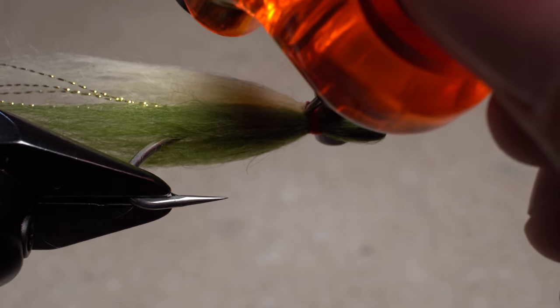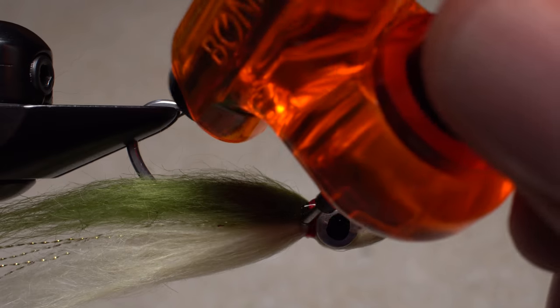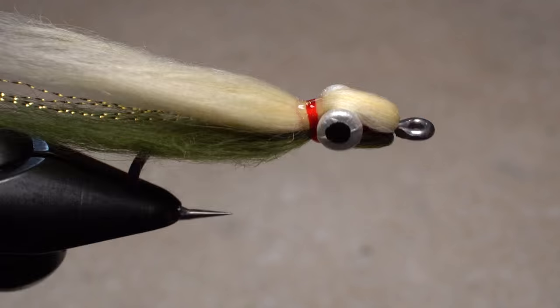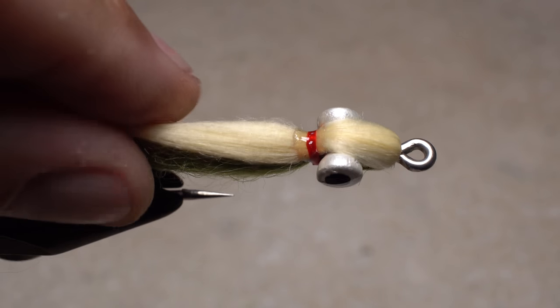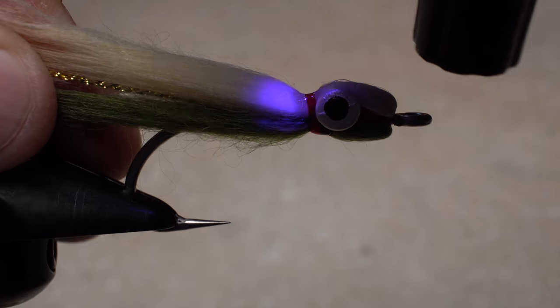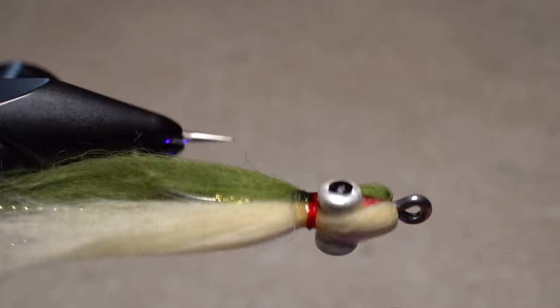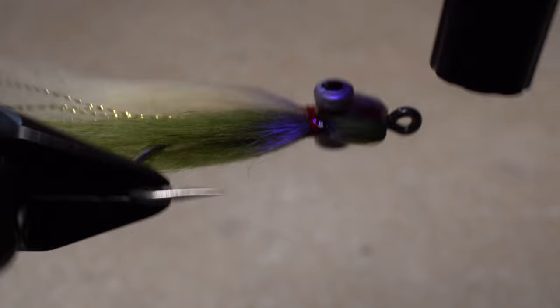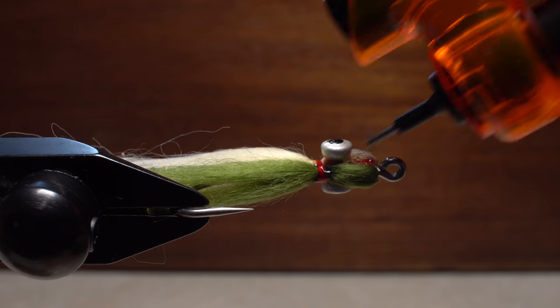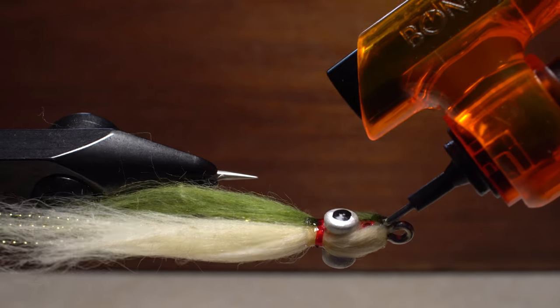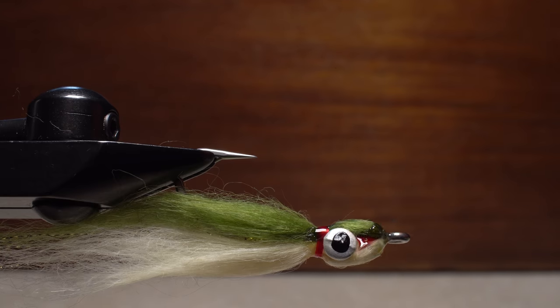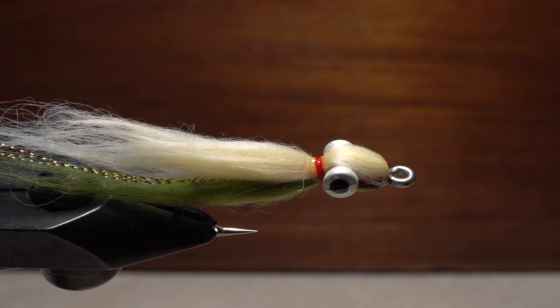Once again, reach for the UV cure resin and apply a significant coat to the thread wraps all the way around. While pulling the fur back, give that resin a really healthy shot with the UV light. You want the resin to soak in a little bit, thus channeling the craft fur rearward. Although not entirely necessary, I like to fill in the little red cheeks and around the back edge of the hook eye in order to increase durability and add a bit of shine.